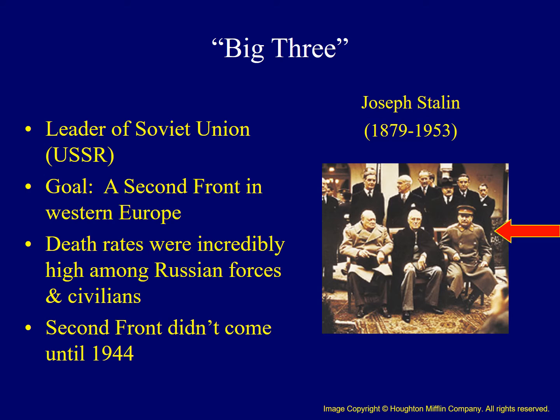The second member of the Big Three was Joseph Stalin, leader of the Soviet Union. His goal was the creation of a second front in Western Europe, because the Soviets bore the brunt of Germany's attacks. The number of Soviet deaths outnumbered the deaths of all the Allied powers combined during the war, and so Stalin sought relief for his nation. Stalin was promised a second front early in the war, but it didn't come until 1944, which led to a lack of trust on Stalin's part.